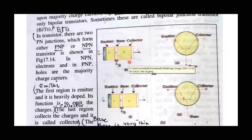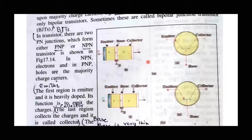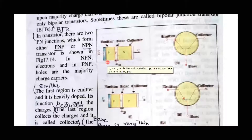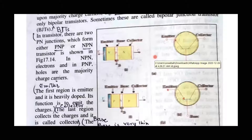If you add a trivalent impurity in silicon or germanium, you add three electrons, and therefore you can add holes in silicon or germanium. When you do doping with pentavalent, it becomes N-type. If you add a trivalent impurity, it becomes P-type. When we join N-type and P-type, we say that it is a P-N junction or diode.